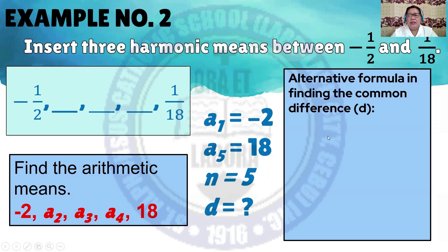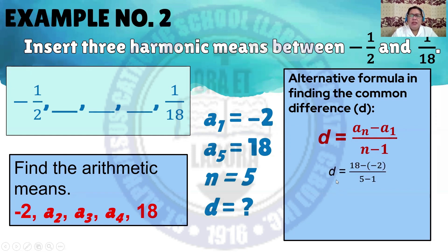You can use the alternative formula for finding the common difference: D is equal to A sub N minus A sub 1, over N minus 1. Substituting: A sub N is 18 minus the first term negative 2, over 5 minus 1. So D equals 18 plus 2, which is 20, over 4. Therefore, D is equal to 5.